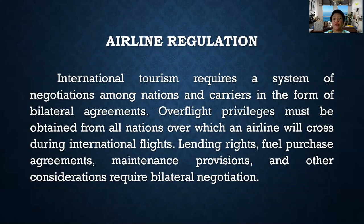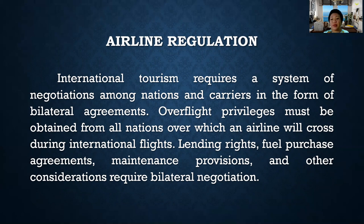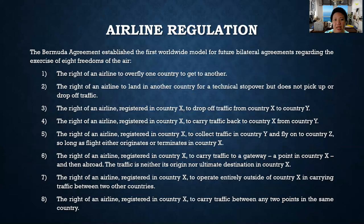International tourism requires a system of negotiations among nations and carriers in the form of bilateral agreements. Airlines need freedom to fly from one country to another. Overflight privileges must be obtained from all nations over which an airline will cross during international flights. Landing rights, fuel purchase agreements, maintenance provisions, and other considerations require bilateral negotiation. The Bermuda Agreement established the first worldwide model for future bilateral agreements regarding the exercise of eight freedoms of the air.